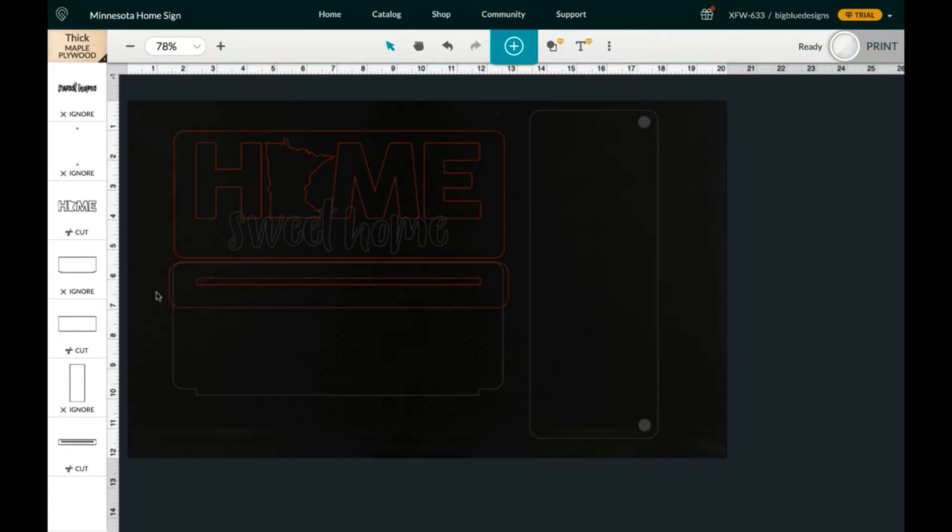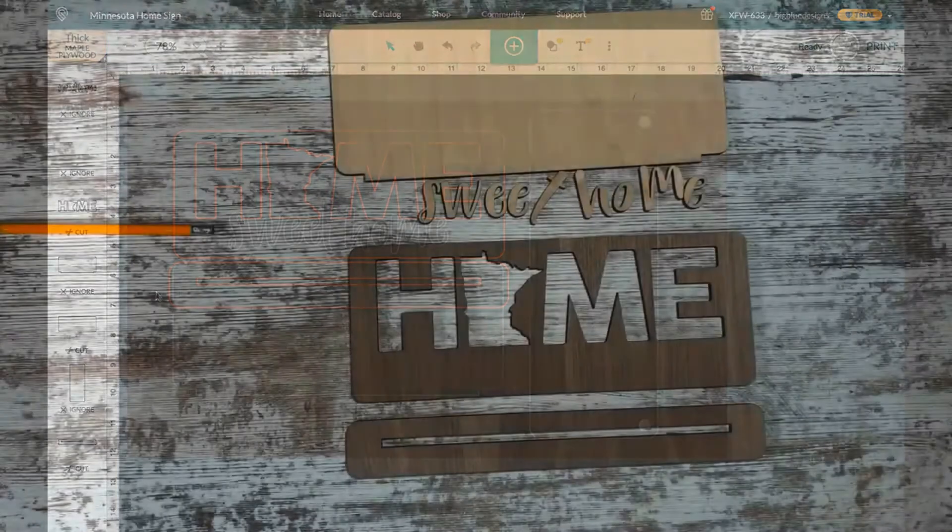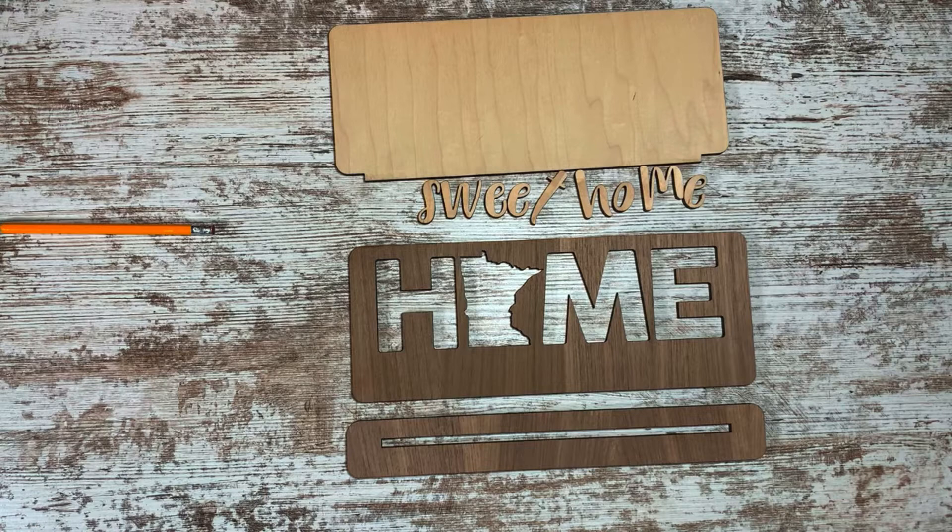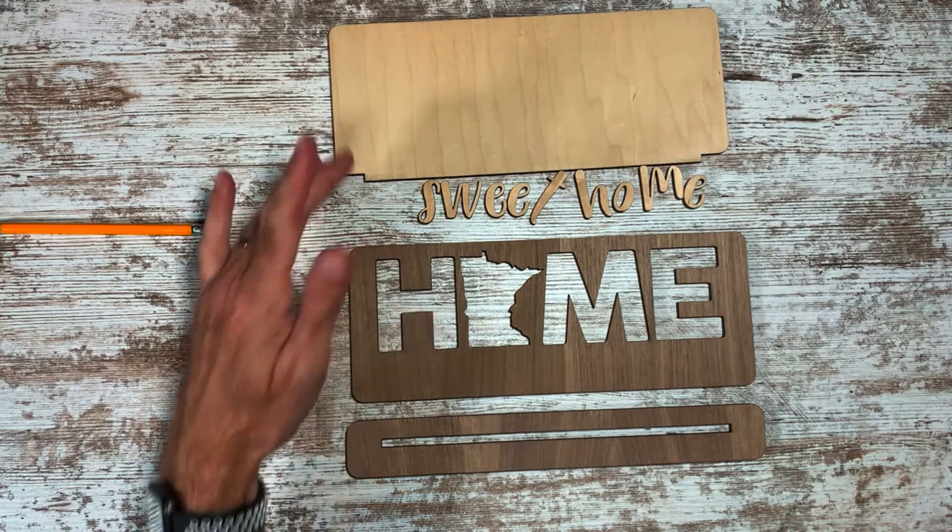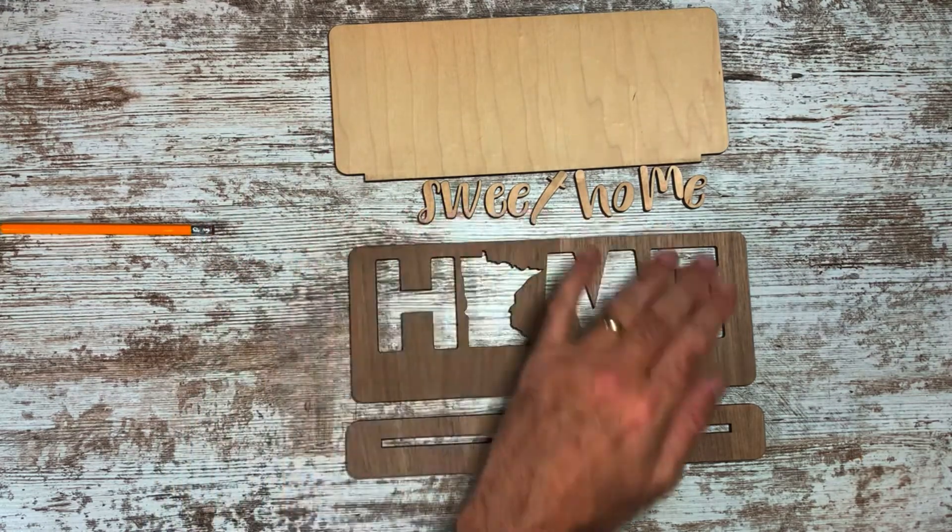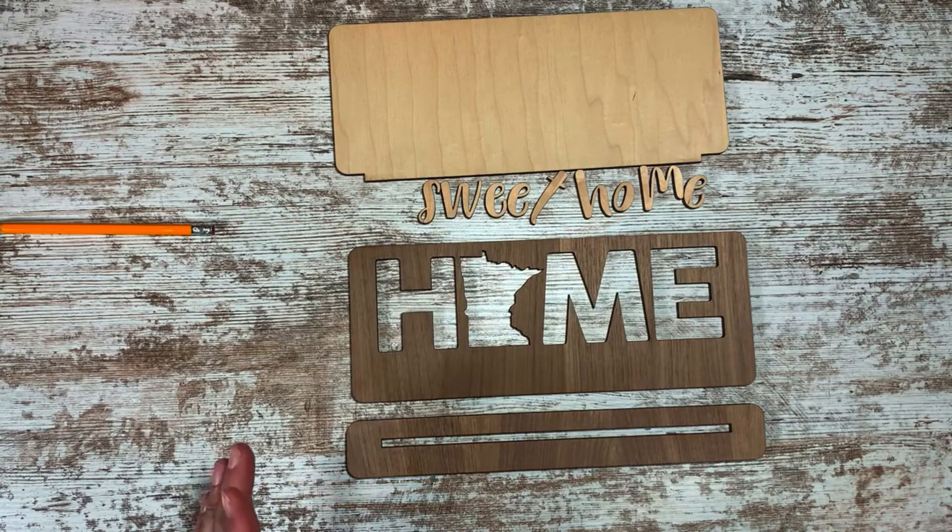So now that you got all that cut out, let's jump over to looking at how the pieces go together. Here are all the pieces for the Home Sweet Home States project. There's just three main pieces and then the words Sweet Home. So let me show you how this goes together.